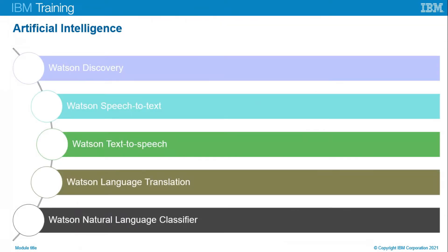Watson Discovery is an intelligent search service that delivers specific answers to questions while serving up an entire document for exploration. You can train it with entire documents, and use Watson Knowledge Studio to build a custom model to train Watson Discovery with unique relationships and entities — for example, using a car service manual to train it to look for specific information about what engine oil to use.